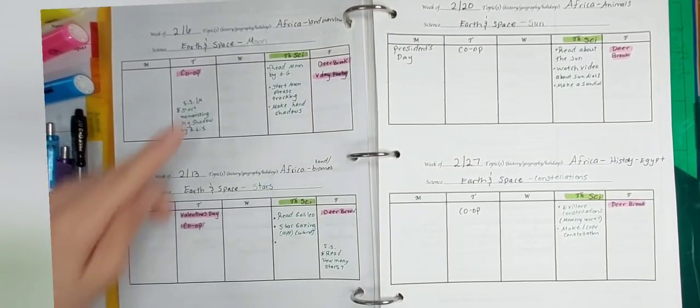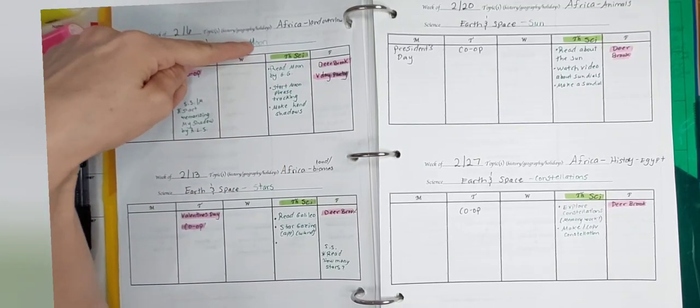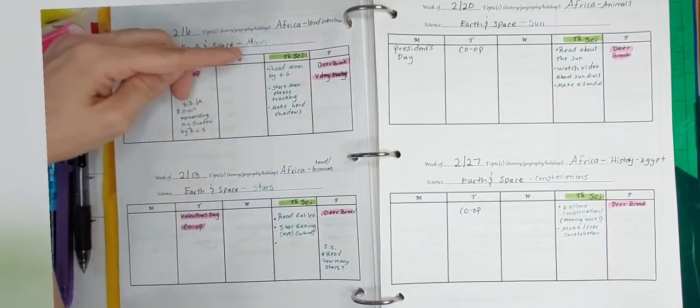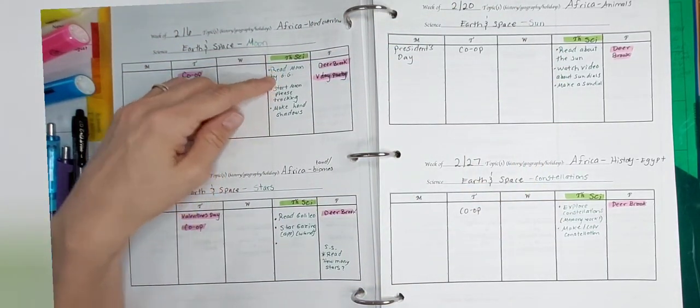All right, now I've gone through and I've marked my specific science themes for earth and space, moon, stars, sun, constellations for weeks one through four. And then each Thursday, I put what we're going to do for each of those things.